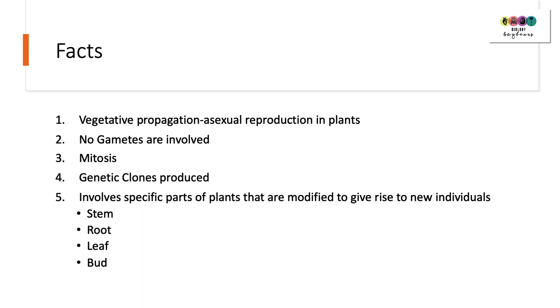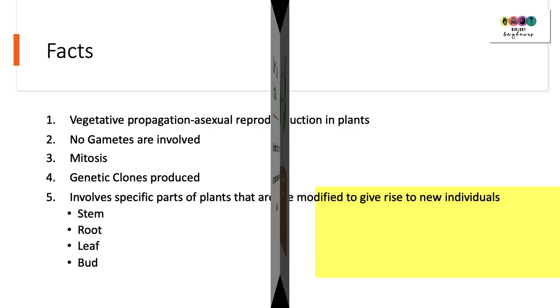It involves specific parts of the plant that are modified to give rise to new individuals, and you have to know the four parts: an example from the stem, the root, the leaf, and a bud.